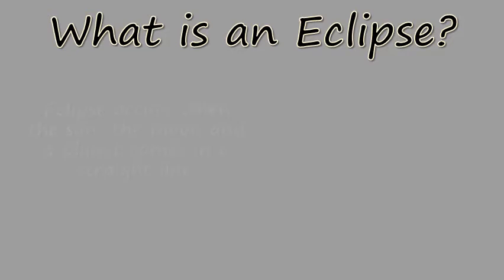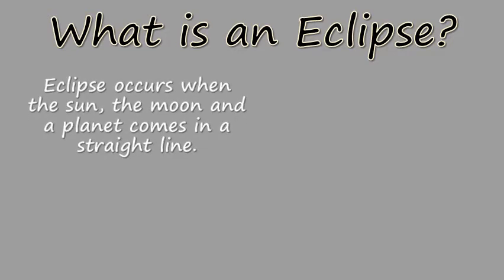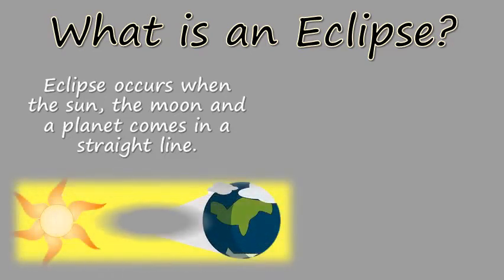What is an Eclipse? Eclipse occurs when the sun, the moon and a planet comes in a straight line.